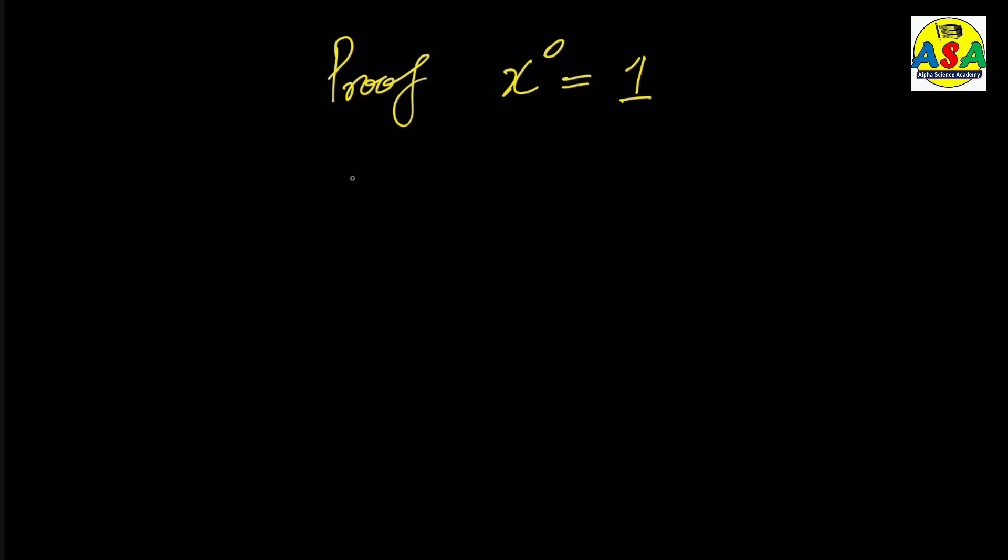So let one of them is x to the power a and the second one is x to the power b. Now let's divide both of them so it will become x to the a over x to the b, and we can write this ratio as x to the a minus b. This is equation number one.